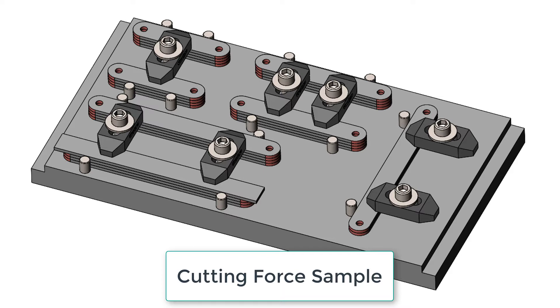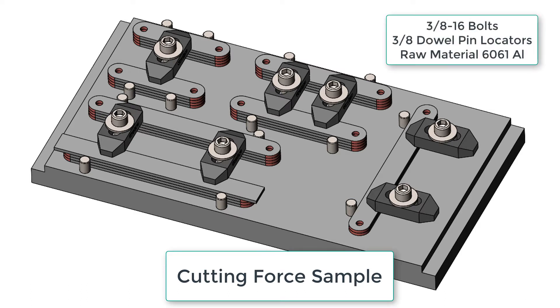This fixture has been designed to hold the parts as shown, the link arms, while the ends are rounded off and the holes are drilled as shown in red. This fixture uses 3/8-16 bolts as the clamps and 3/8 dowels as the locators.